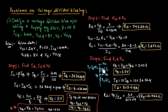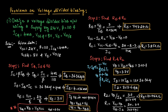Now we can find the value of R1. R1 is equal to (VCC minus VB) divided by I1. I1 is nothing but IB plus I2. So R1 equals (VCC minus VB) divided by (IB plus I2), which is (24 minus 3.7) divided by (363.6 microamperes plus 36.36 microamperes). Solving this, R1 is equal to 50.75 kilo ohms.